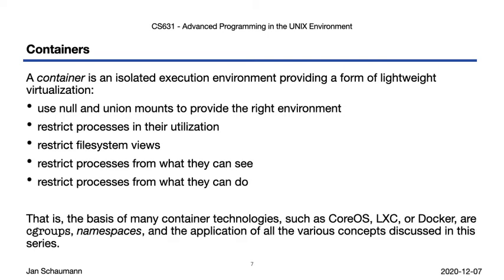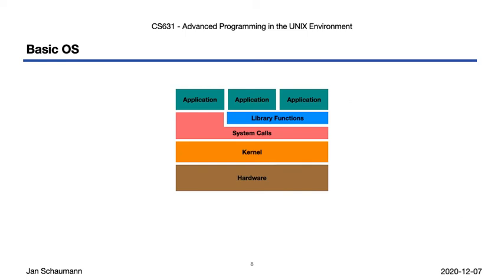In fact, the combination of cgroups and namespaces forms the basis for many operating system-level virtualization and container technologies such as CoreOS, LXC, or Docker. Consider the basic operating system with the layered distinction we've used from the beginning of the semester: we have hardware at the bottom, a kernel managing the hardware, a set of system calls as the interface into the kernel, as well as a number of library functions to allow applications to execute within the OS.